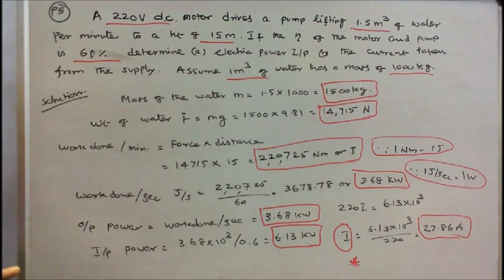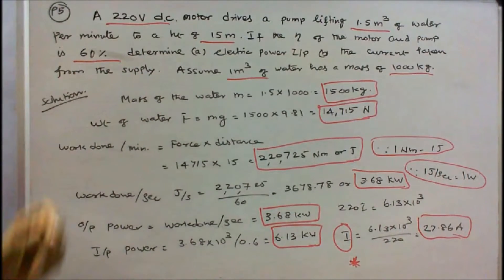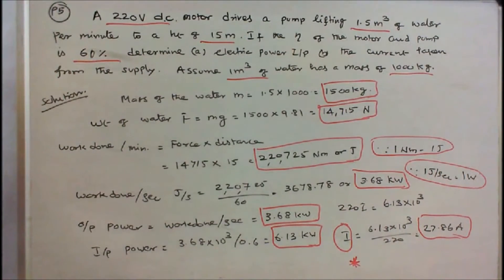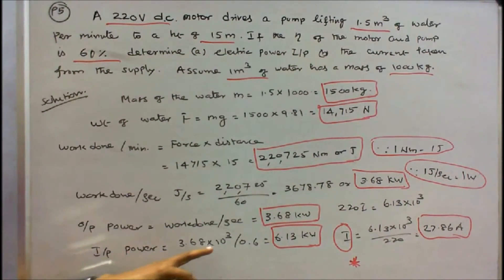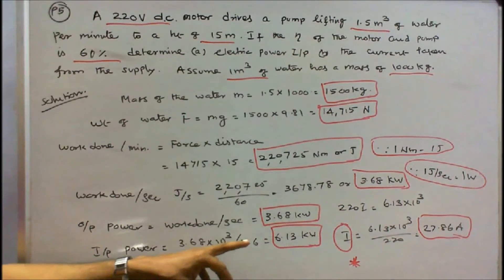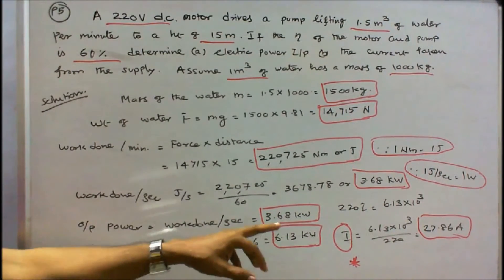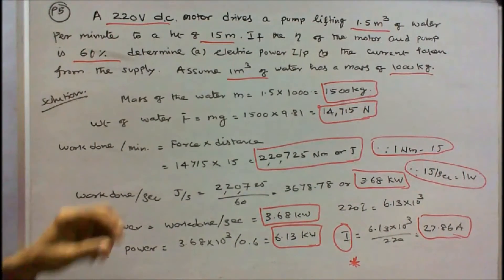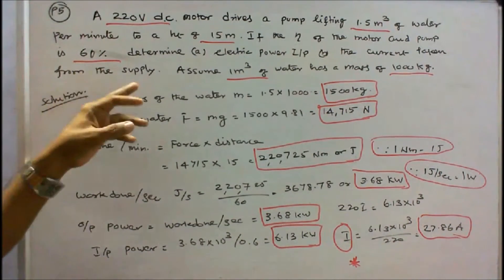We can find input. Efficiency is given 60%. Therefore input power is equal to 3.68 into 10 power 3 divided by 0.6, that is equal to 6.13 kilowatts. Now we find the current taken from the supply.